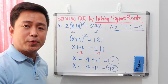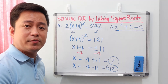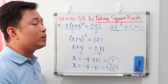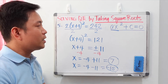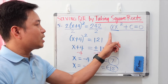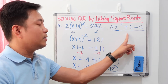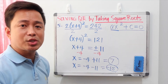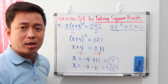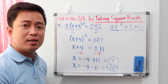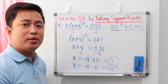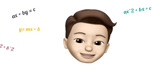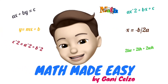Taking square roots is not a difficult method, but it can only be used if you have a quadratic equation in the ax squared plus c equals 0 format — similar to factoring, which can only be used if the given quadratic equation is factorable.